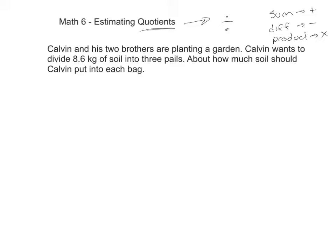Calvin and his two brothers are planting a garden. Calvin wants to divide 8.6 kilograms of soil into three pails, about how much soil should Calvin put into each bag. So we're taking 8.6, and we're dividing it into three.